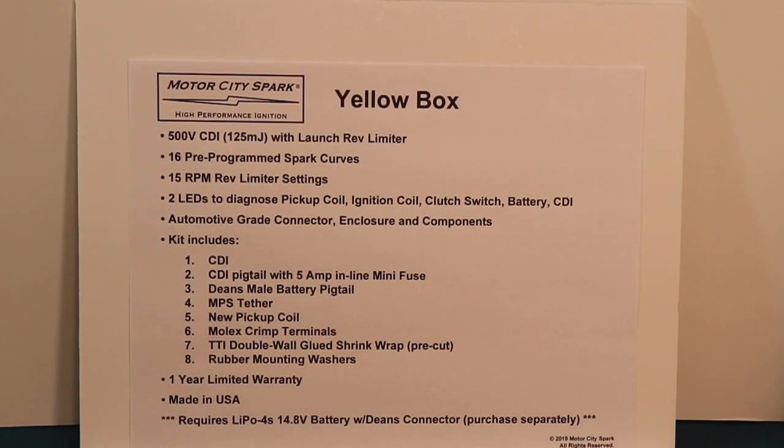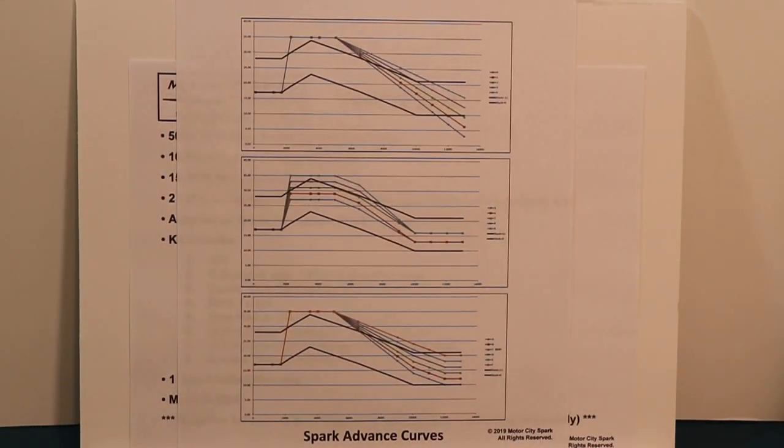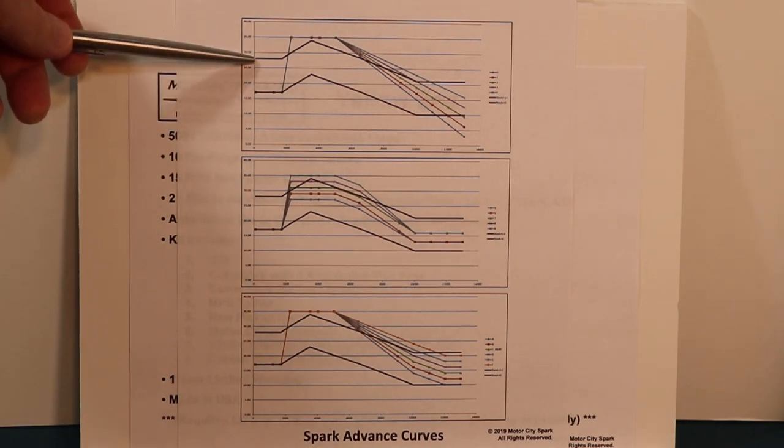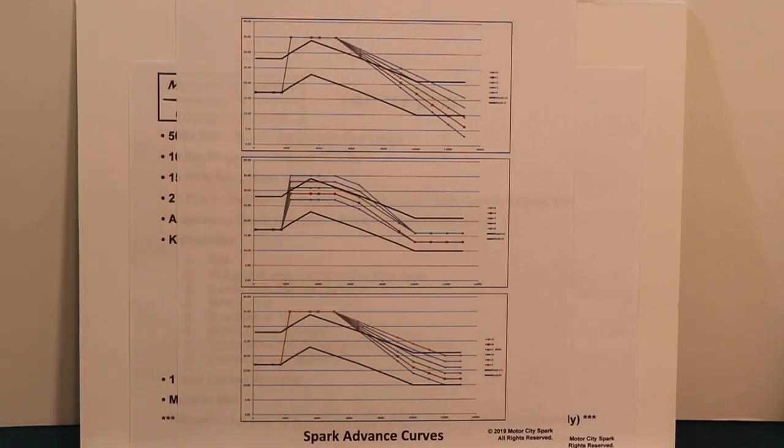So we'll move on to the Spark Advance curves. The Spark Advance comes in three different groups. For your reference, this thick black line here, this is the OEM at zero plate. And this is the OEM at plus 11 plate. All of our curves are with the OEM at plus 11 plate.